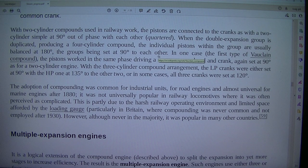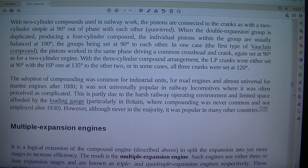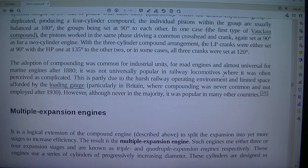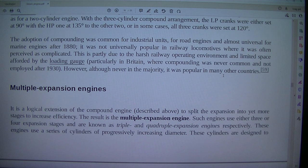With two cylinder compounds used in railway work, the pistons are connected to the cranks as with a two cylinder simple at 90 degrees out of phase with each other. When the double expansion group is duplicated, producing a four cylinder compound, the individual pistons within the group are usually balanced at 180 degrees, the groups being set at 90 degrees to each other. In one case, the first type of Vauclain compound, the pistons worked in the same phase driving a common crosshead and crank, again set at 90 degrees for a two cylinder engine. With the three cylinder compound arrangement, the LP cranks were either set at 90 degrees with the HP one at 135 degrees to the other two, or in some cases, all three cranks were set at 120 degrees.